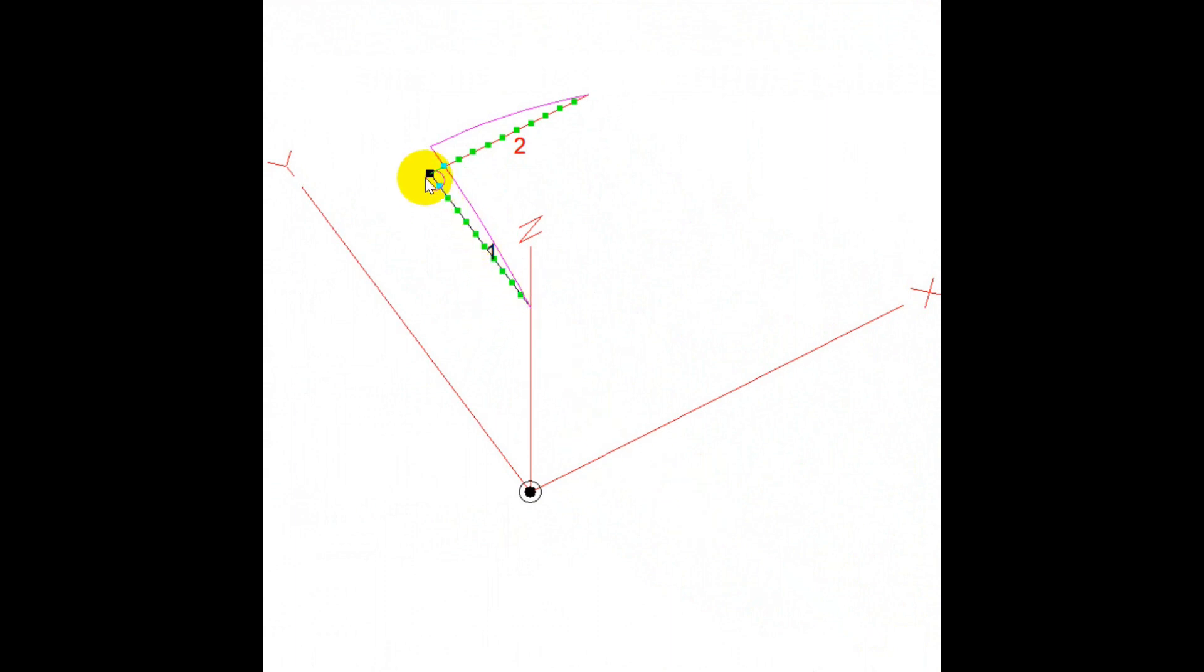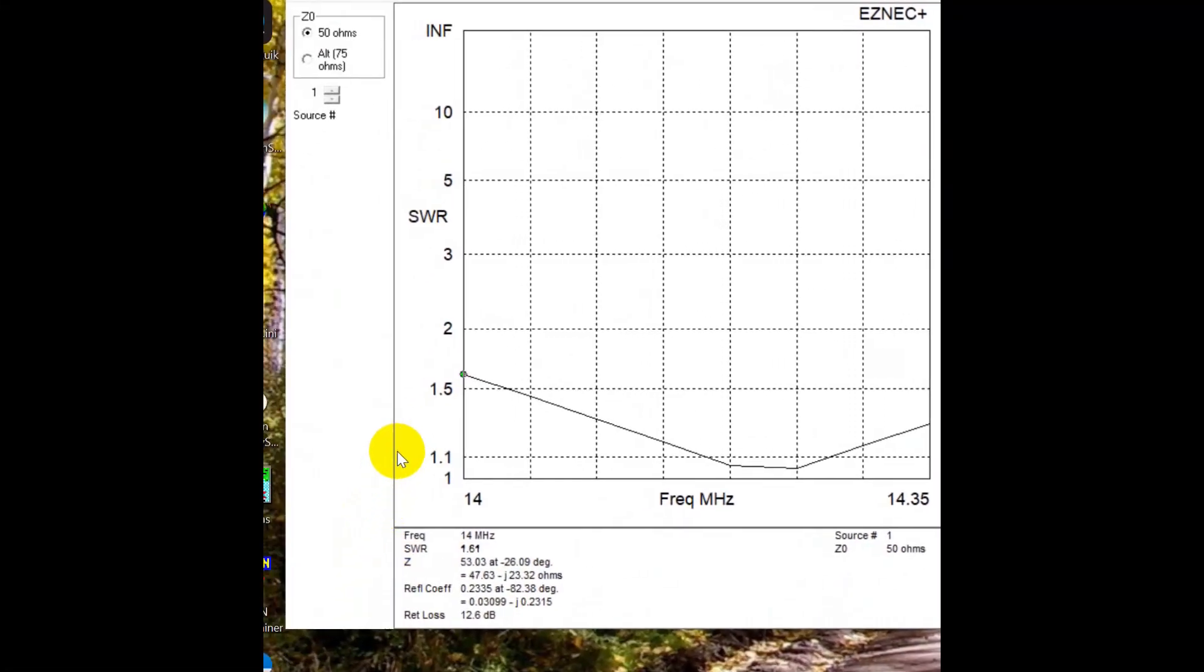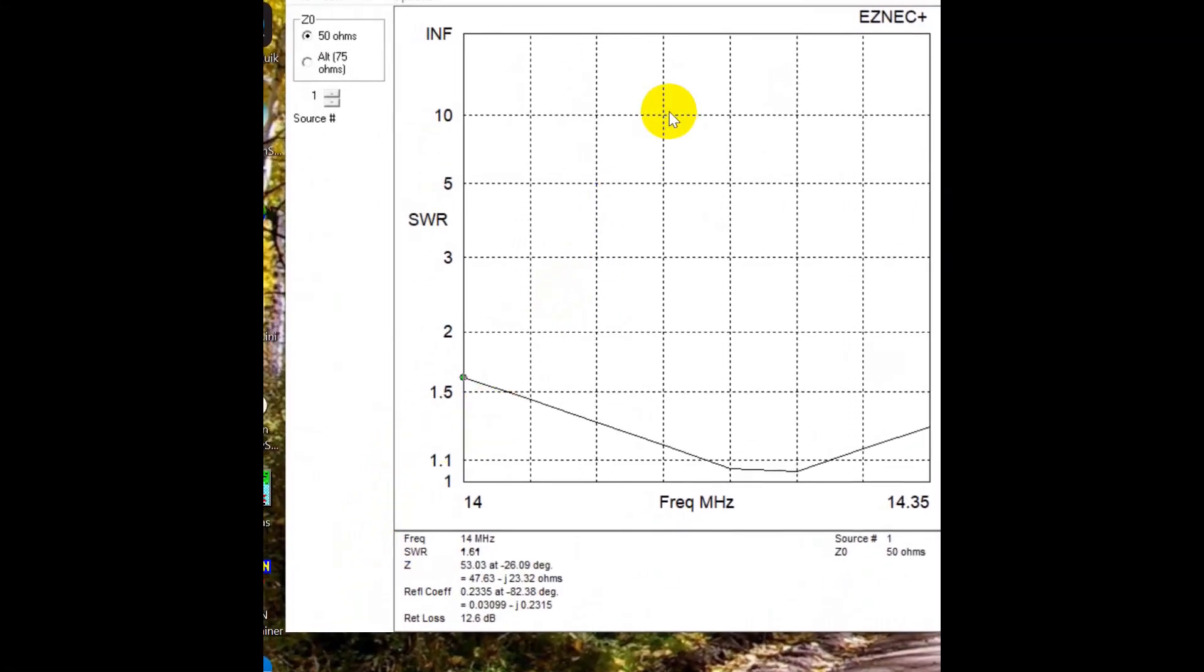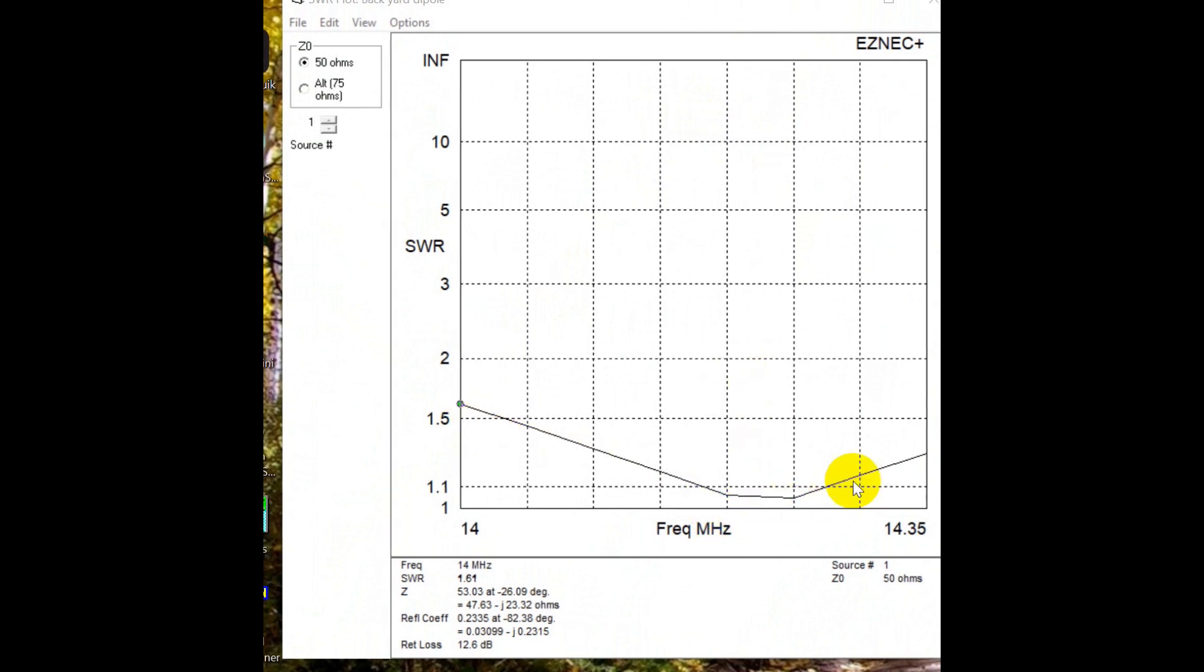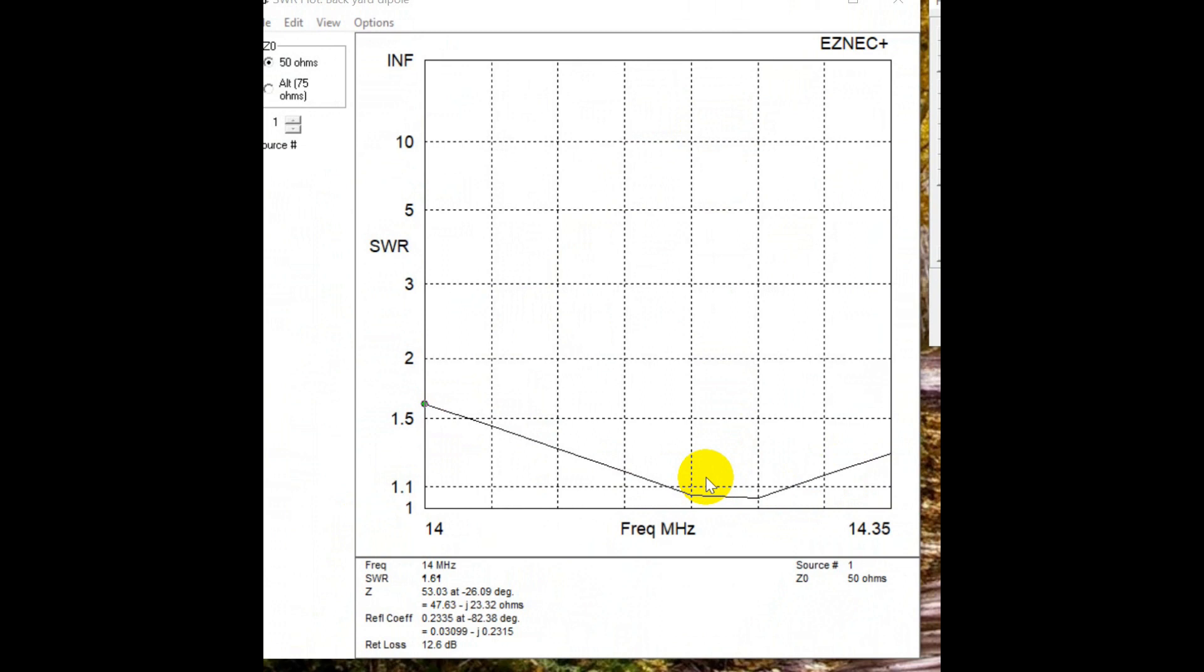We've got this wire, this wire, and we're feeding in the middle. And each of these is a quarter wavelength on 20 meters. And we get an SWR plot that looks about like this. It's very good down here in the middle of the band. And it's under two to one across the entire band.